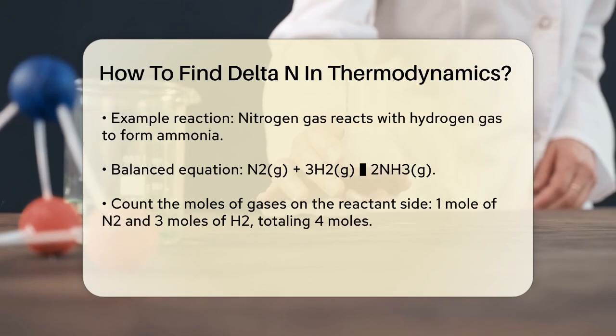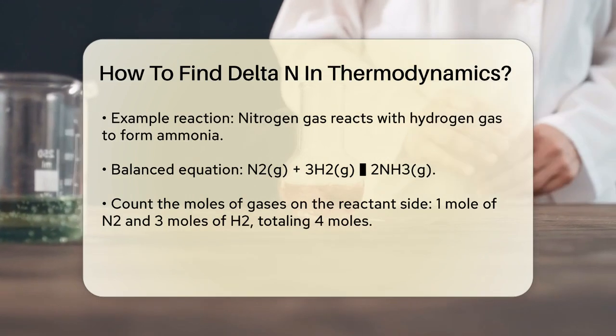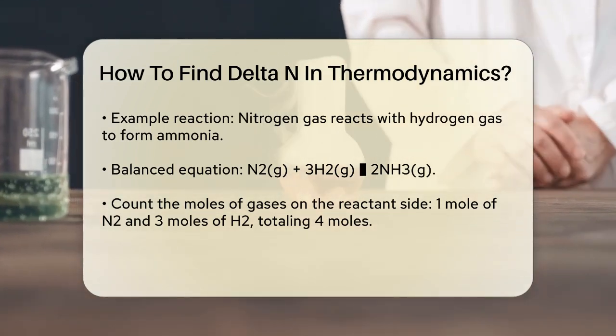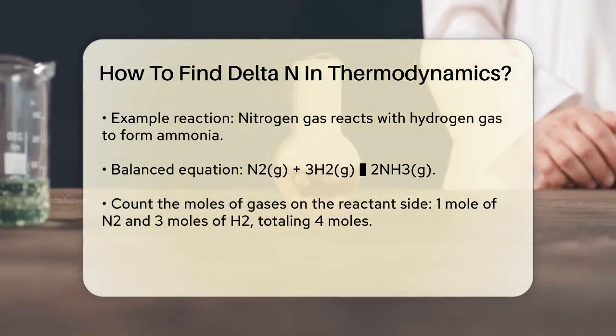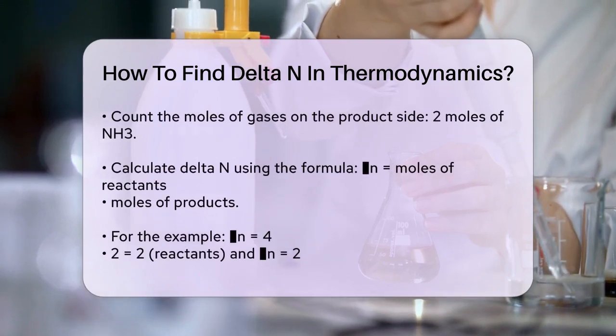Next, count the number of moles of gases on the reactant side and the product side. On the reactant side, we have 1 mole of N2 and 3 moles of H2, making a total of 4 moles of gas. On the product side, we have 2 moles of NH3.